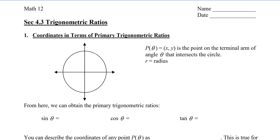In this video, I'm going to show you how to find trigonometric ratios placed in a circle, and then we're also going to take a look at reciprocal trigonometric ratios. So to start, let's look at the coordinates in terms of the primary trig ratios.